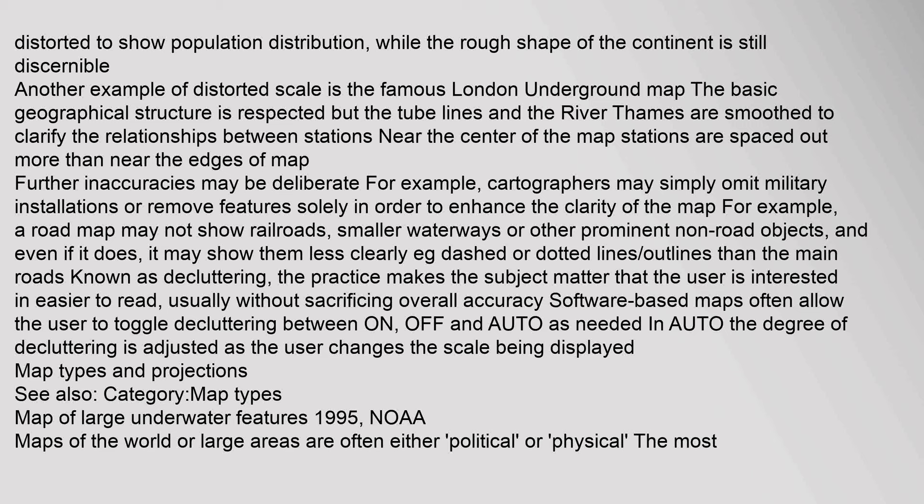Another example of distorted scale is the famous London Underground map, where the basic geographical structure is respected but tube lines and the River Thames are smoothed to clarify relationships between stations. Further inaccuracies may be deliberate — cartographers may omit military installations or remove features solely to enhance the clarity of the map. For example, a road map may not show railroads, smaller waterways, or other prominent non-road objects. This practice, known as decluttering, makes the subject matter easier to read. Software-based maps often allow the user to toggle decluttering between on, off, and auto as needed.